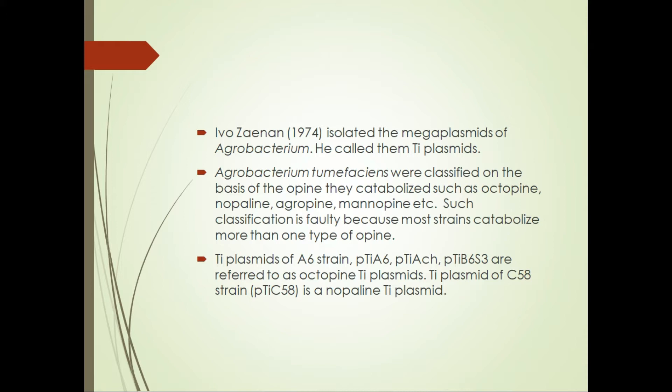Here are some examples: octopine Ti plasmids are found in A6-strain-like plasmids such as Ti-A6, Ti-ACH, and Ti-B6S3 — these are all octopine-utilizing strains. Whereas the C58-strain-like plasmid Ti-C58 is a nopaline-utilizing strain, because its plasmids have genes to synthesize nopaline.